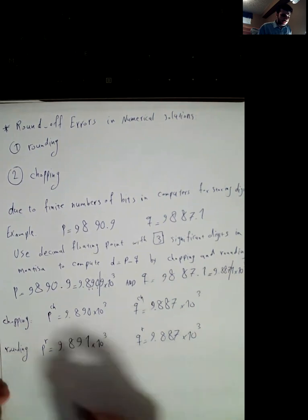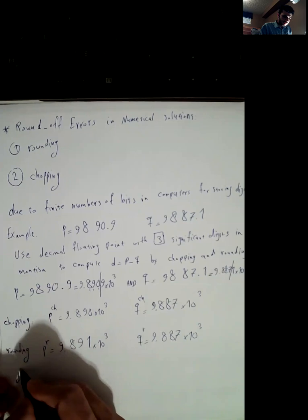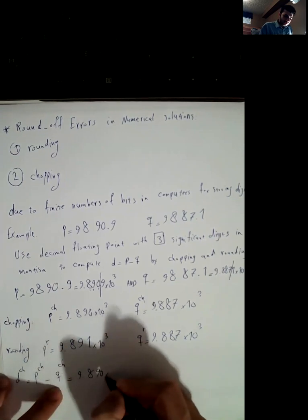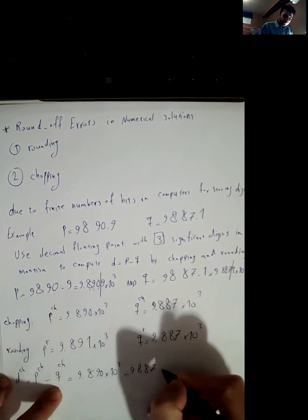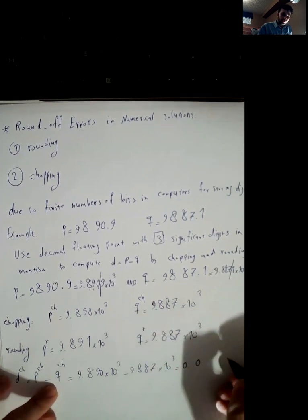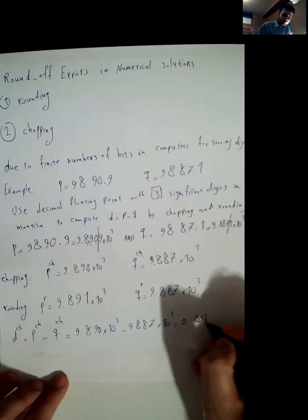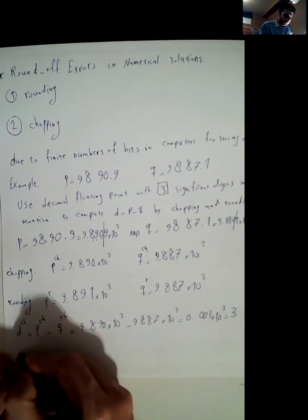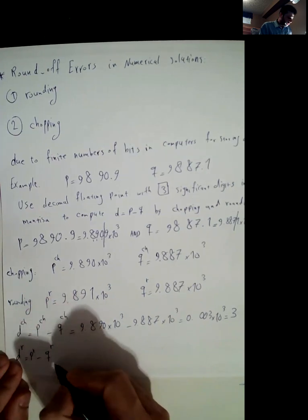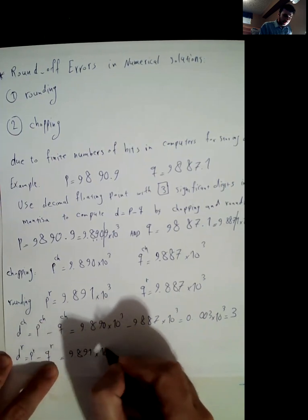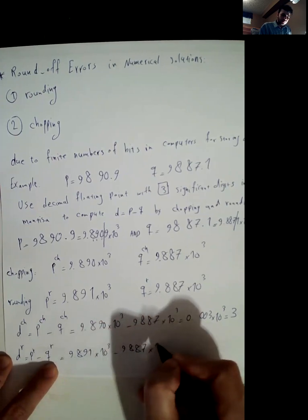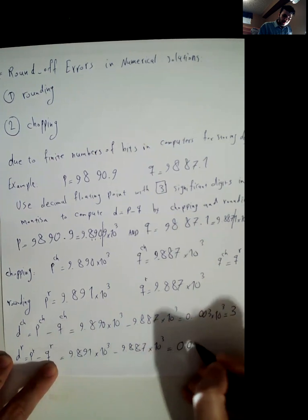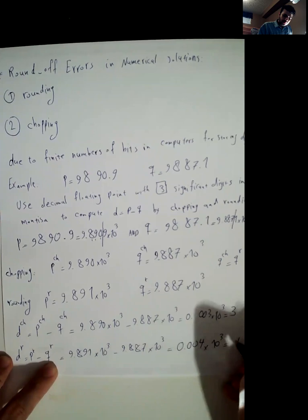We obtain chopping and rounding values. We want to see what is the difference. D chopping is p chopping minus q chopping which is 9890 minus 9887, which is 0.003 times 10 to the 3, which is 3.